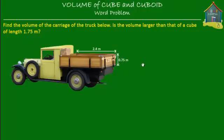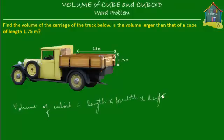We know the formula to calculate the volume of a cuboid. We learned that in a previous lesson. The volume of a cuboid is equal to its length times its breadth or width times its height or its depth.